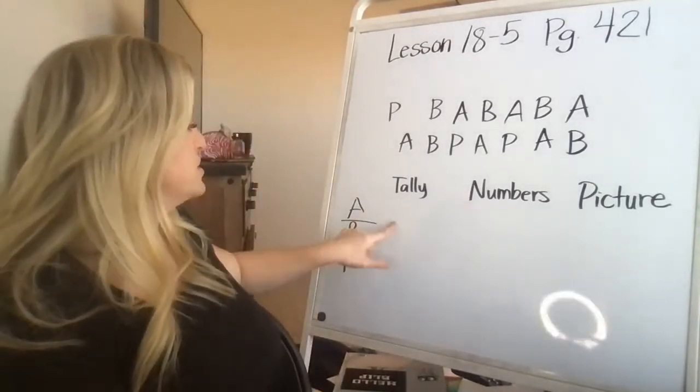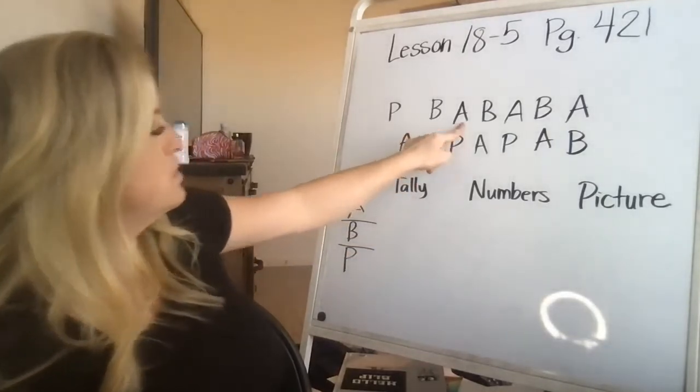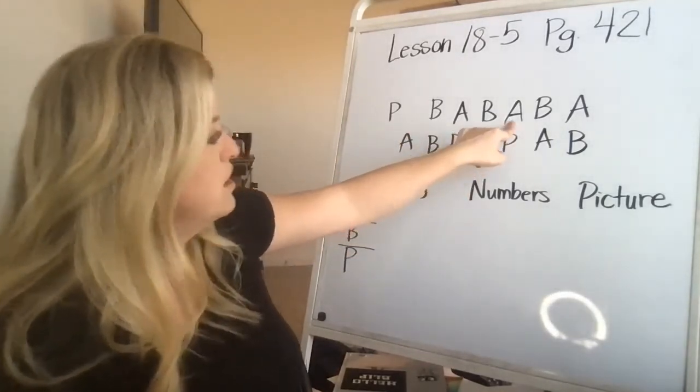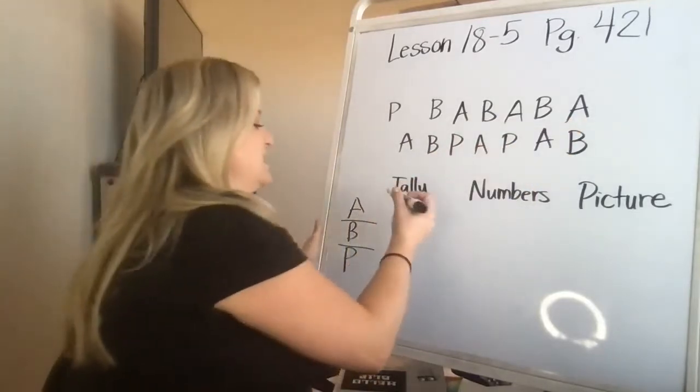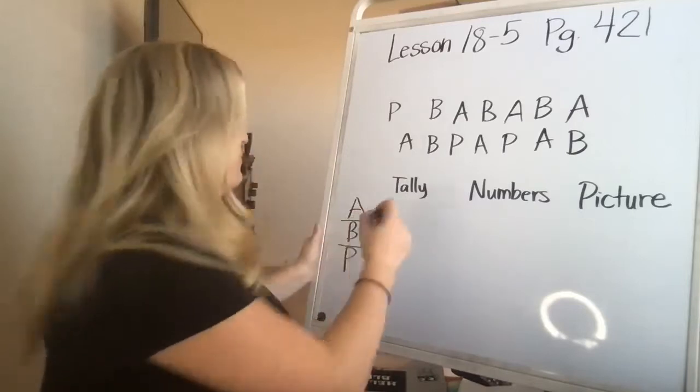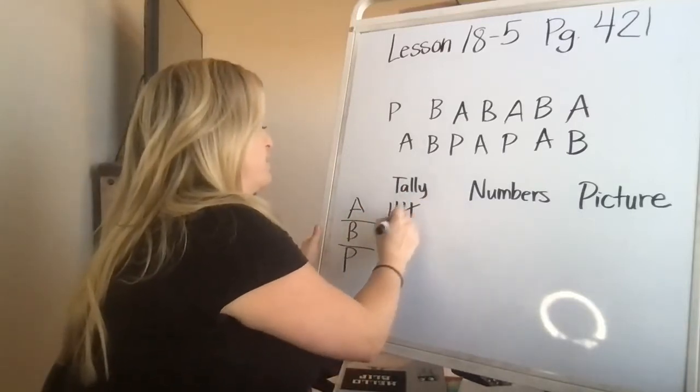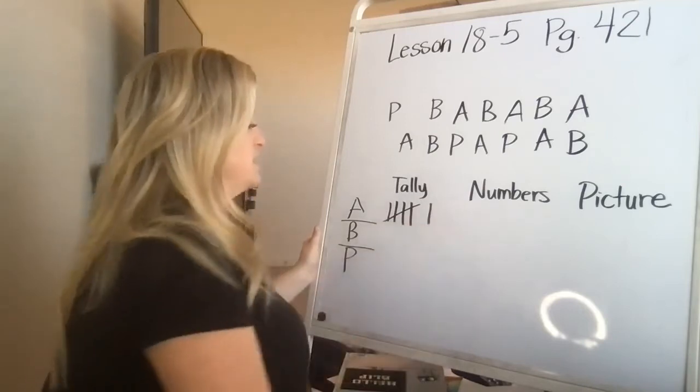So we're going to start with apples. We have one, two, three, four, five, six apples. So I'm going to draw six and you need to write those in your book too. One, two, three, four, bundle it across, five and six.